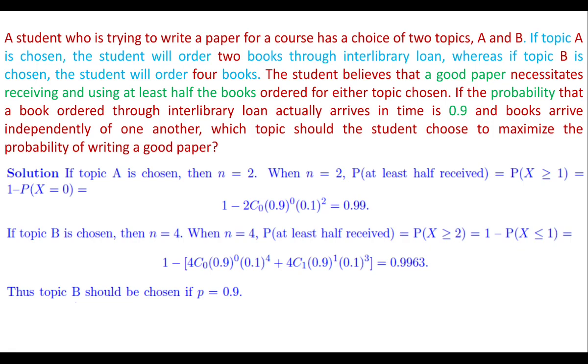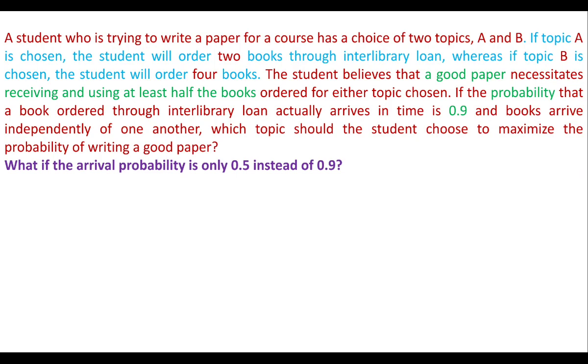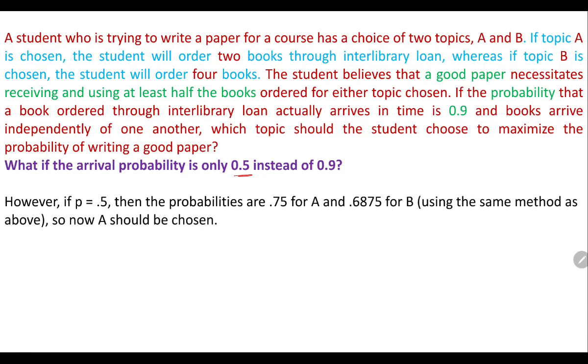There is one more part: if the probability changes from 0.9 to 0.5, the process remains the same. Please try it by yourself.